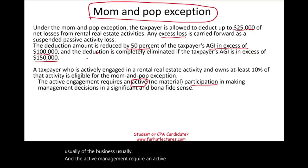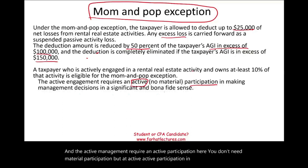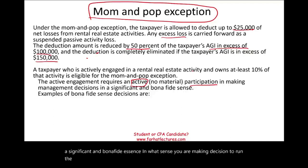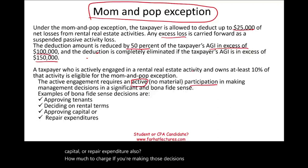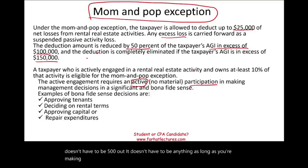The active management requires active participation. Here you don't need material participation, but active participation and making decisions in a significant and bona fide sense. What major decisions do you make as a landlord? Approving tenants, deciding on rental terms, approving capital or repair expenditures, and deciding how much to charge. If you're making those decisions and meet the other qualifications, you can use up to $25,000 of losses against your active income.